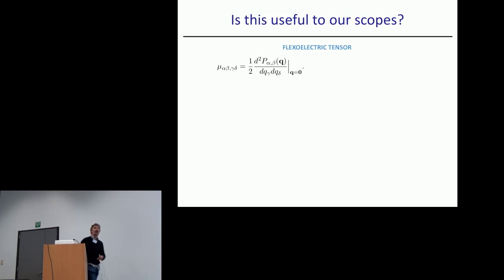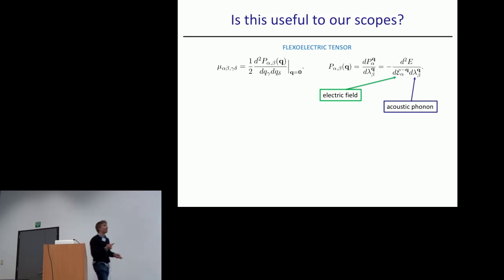Is this useful? Let's go back to flexoelectricity. This is the formula we had at the beginning—the mu tensor as the second derivative in Q of the polarization response to an acoustic phonon. Is what I showed you useful to solve this problem? The first thing we need is to write it as a second derivative of the energy, so we can write it as a second derivative of the energy with respect to an electric field perturbation at some Q and an acoustic phonon at some Q.